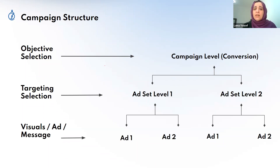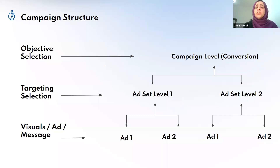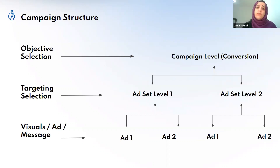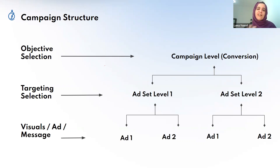Do you want to get more people to know about your business? Or do you want more people to watch a video, visit your website, or engage with your Instagram? Or do you want more people to convert — specifically buy products from your website or app? Every campaign can only have one objective. If you want to increase awareness and increase sales, you need to run two separate campaigns. Facebook will optimize toward that single objective, and when I say Facebook, I also mean Instagram — they're one company, so everything applies to both.